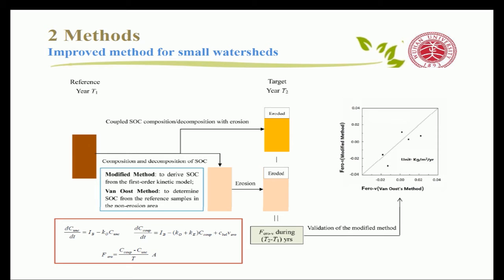There are three mechanisms that lead to the change of organic carbon in soil profiles. The first mechanism is the composition and decomposition of organic carbon under a static condition, meaning no soil erosion or deposition occurs. The second mechanism is the soil organic carbon loss through erosion. The third mechanism is the extra CO2 flux induced by the interaction between soil erosion and the decomposition of organic carbon.